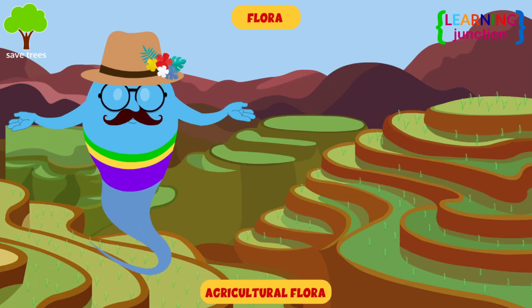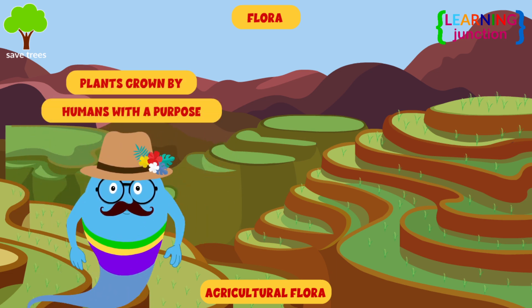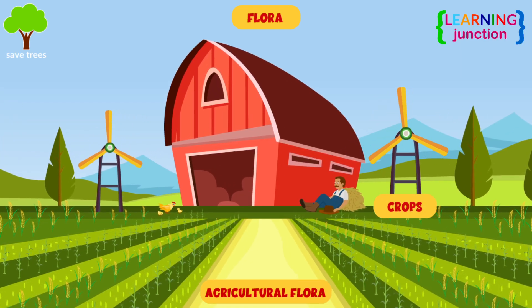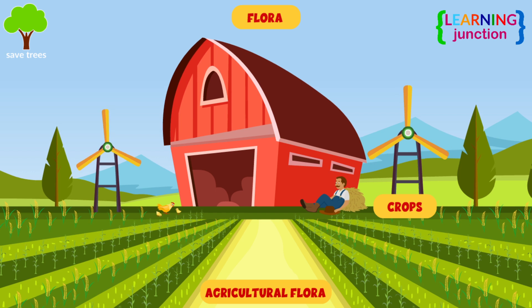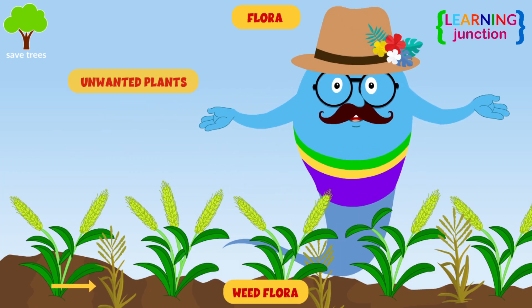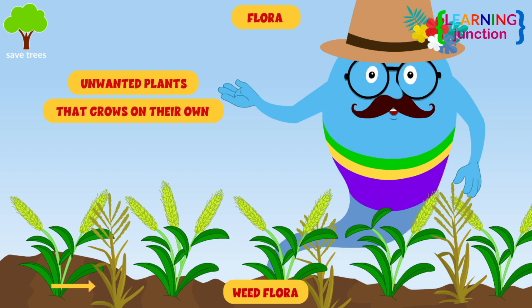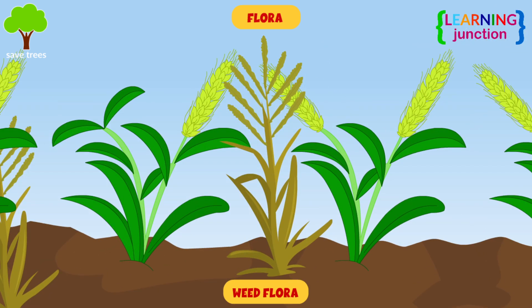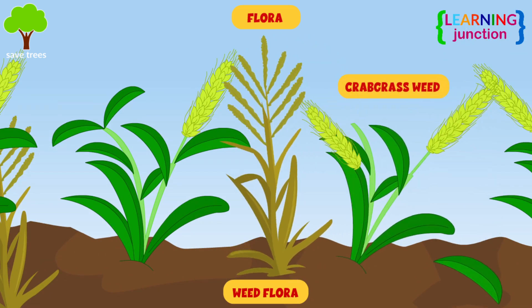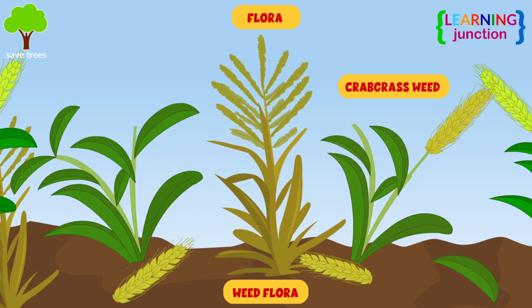Agricultural flora: these are the plants grown by humans with a purpose. For example, crops grown by farmers. Weed flora: weeds are known to be unwanted plants that grow in the fields on their own. For example, large crabgrass, which competes directly for soil nutrients and moisture.